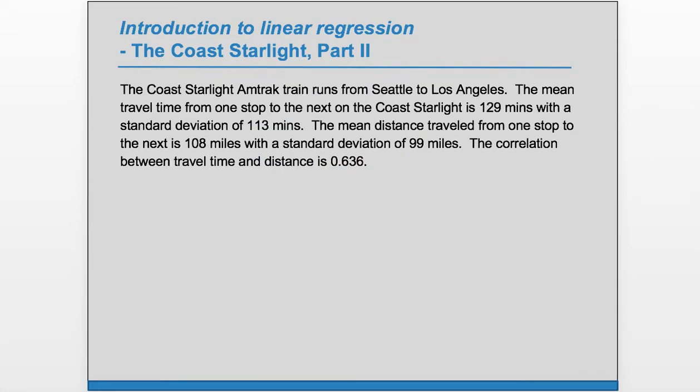The Coast Starlight Amtrak train runs from Seattle to Los Angeles. The mean travel time from one stop to the next on the Coast Starlight is 129 minutes with a standard deviation of 113 minutes. The mean distance traveled from one stop to the next is 108 miles with a standard deviation of 99 miles. The correlation between travel time and distance is 0.636.